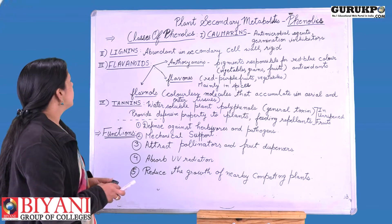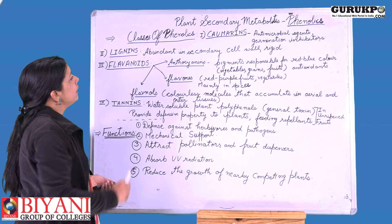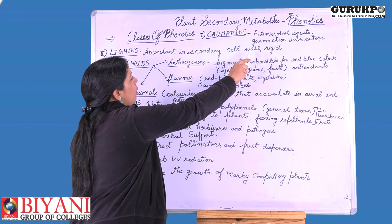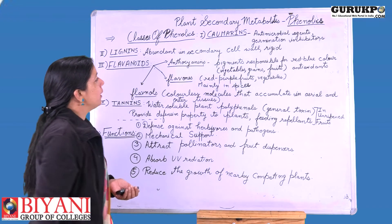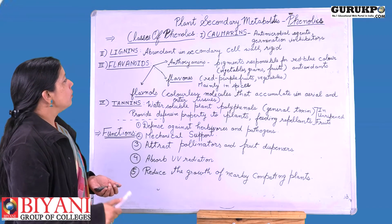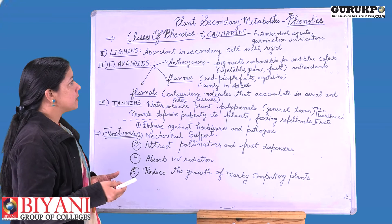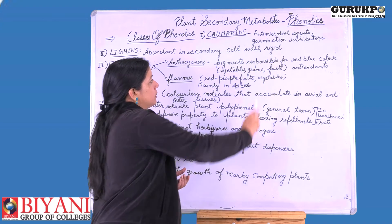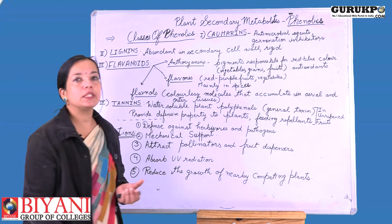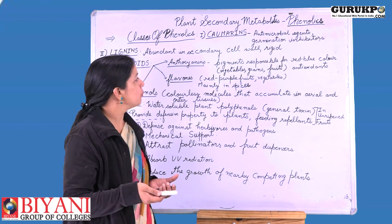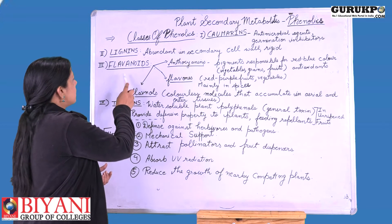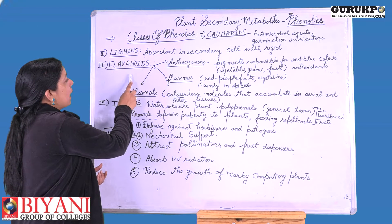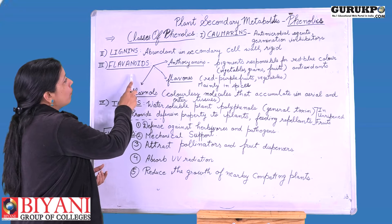The second class is lignin. Lignin is found in abundant quantity in the secondary cell wall of the cell, and because it is present there, it is responsible for the rigidity of the cell wall and provides mechanical support to the plant. The next class is flavonoids, which is the largest class of phenolics.